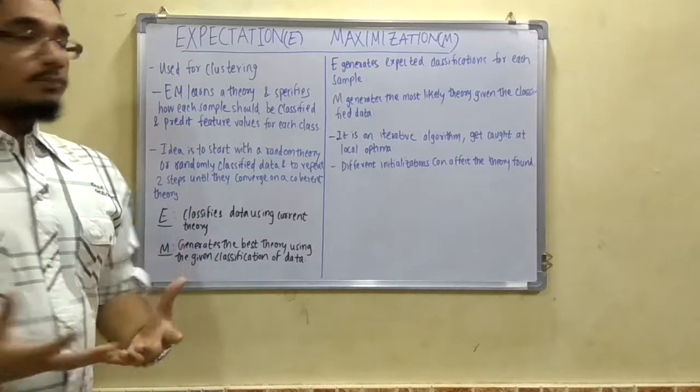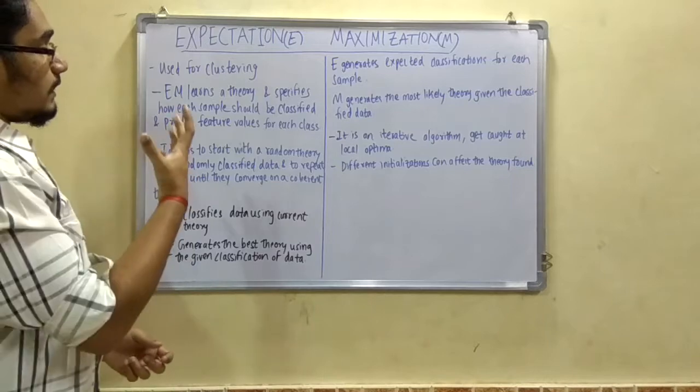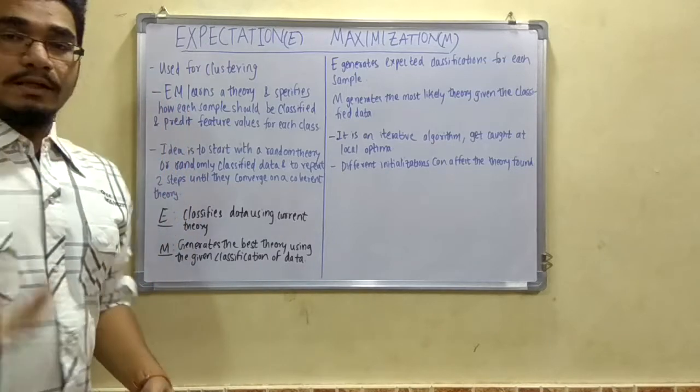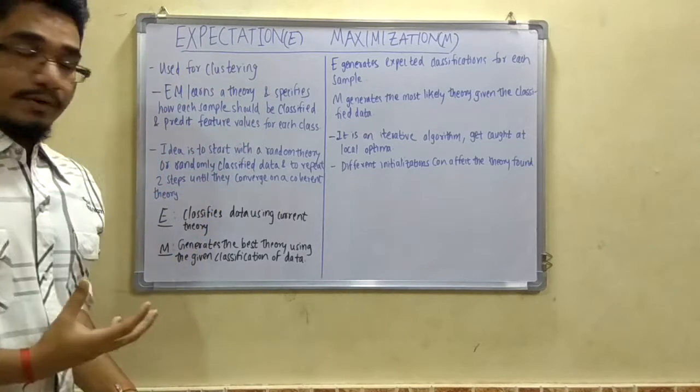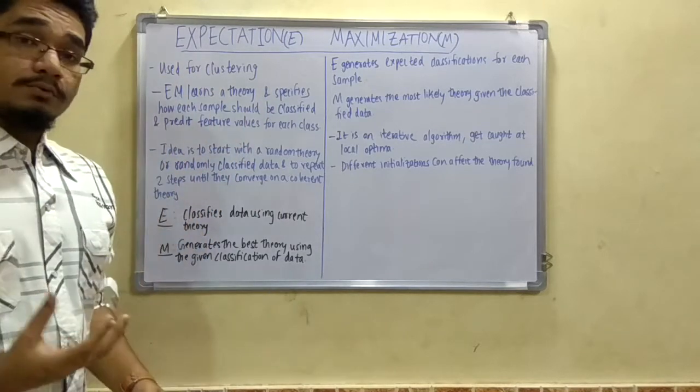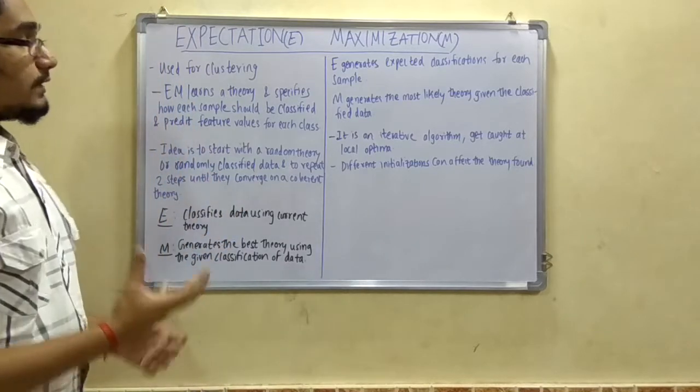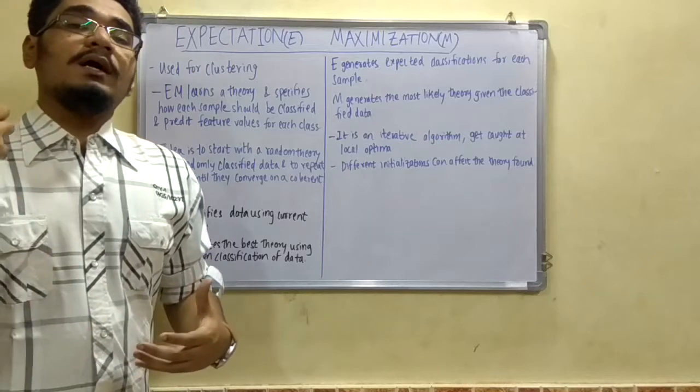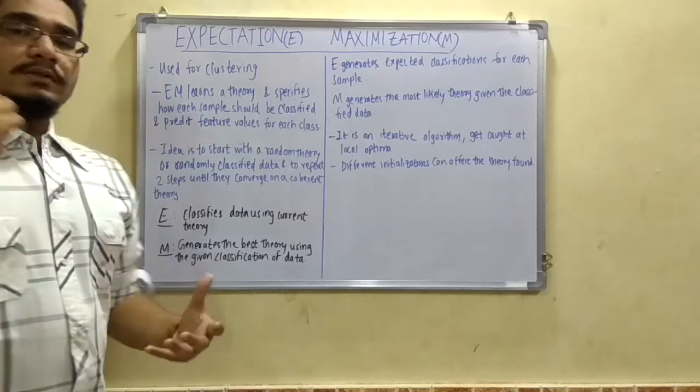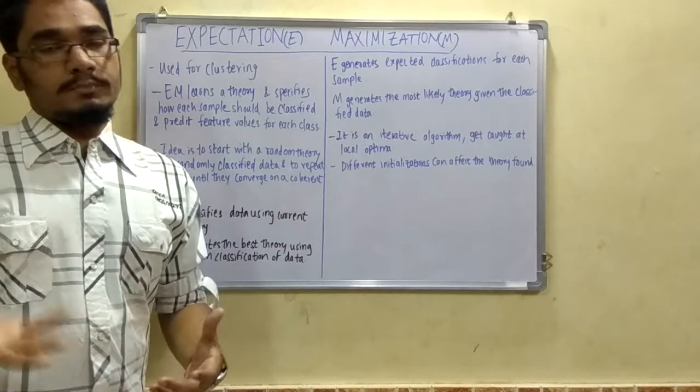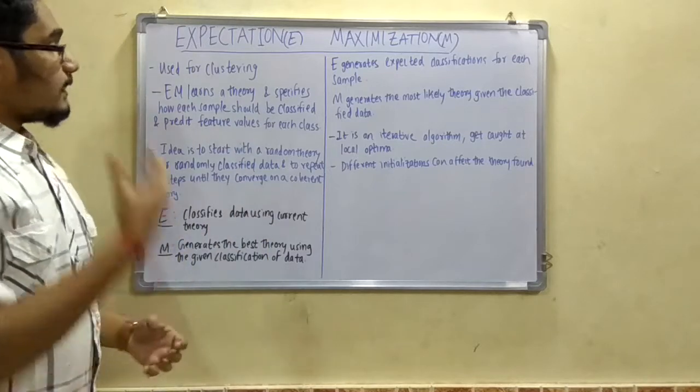This algorithm is used for clustering. The EM learns a theory and specifies how each sample should be classified and predicts future values for each of the classes. Expectation maximization will learn a theory - this algorithm will learn a random theory as specified by the user, any condition or situation.